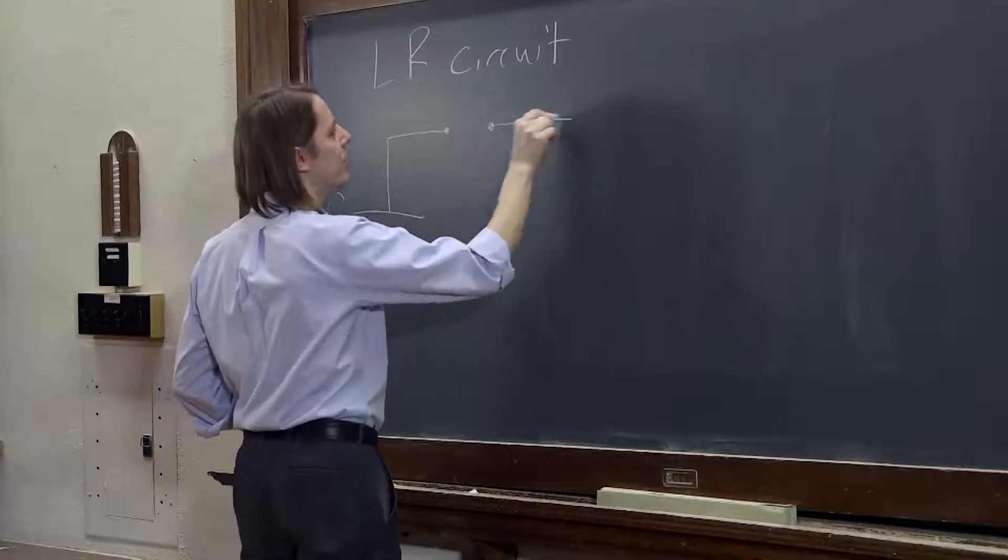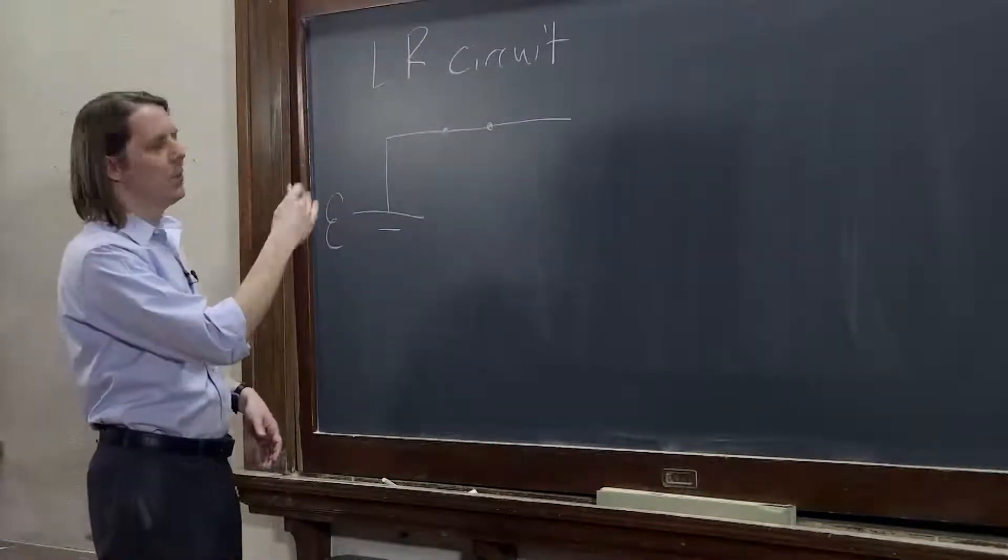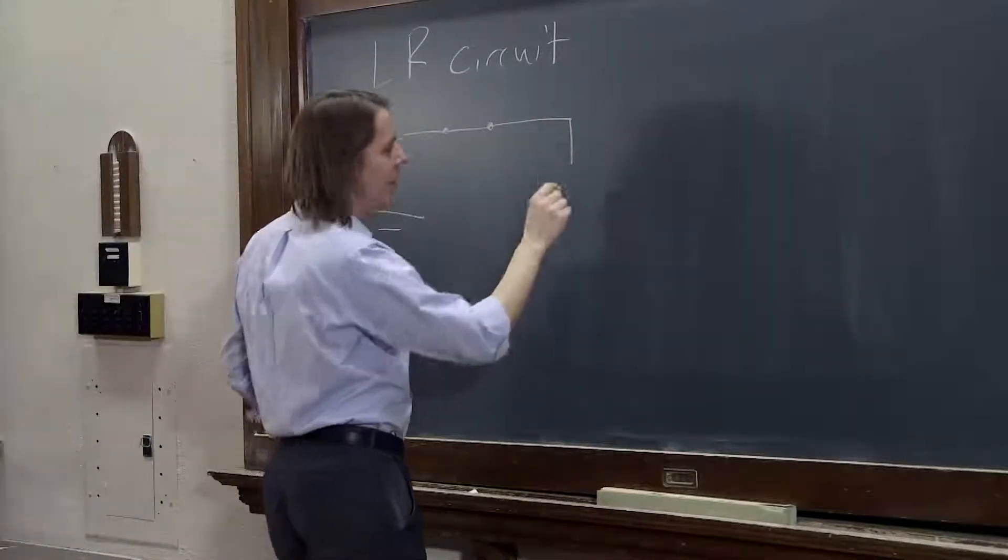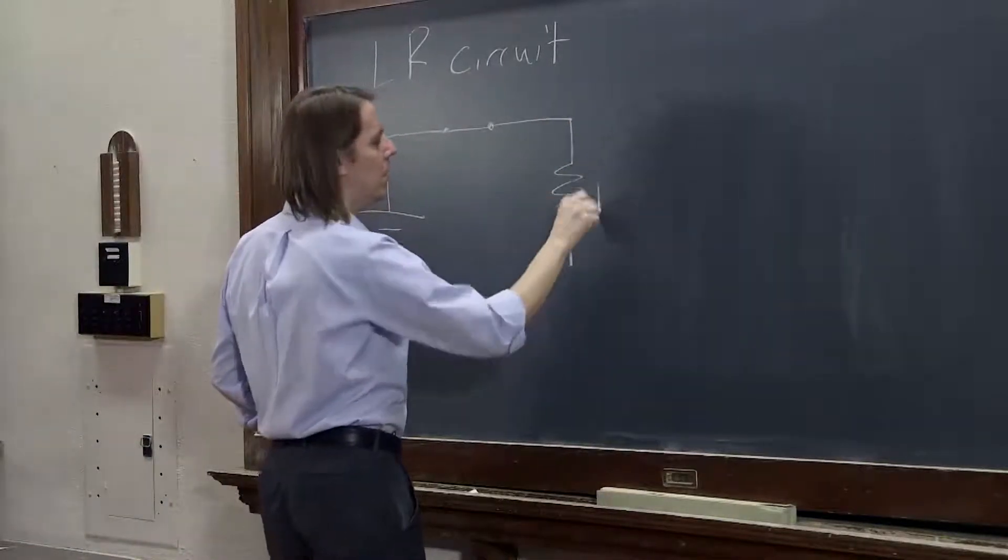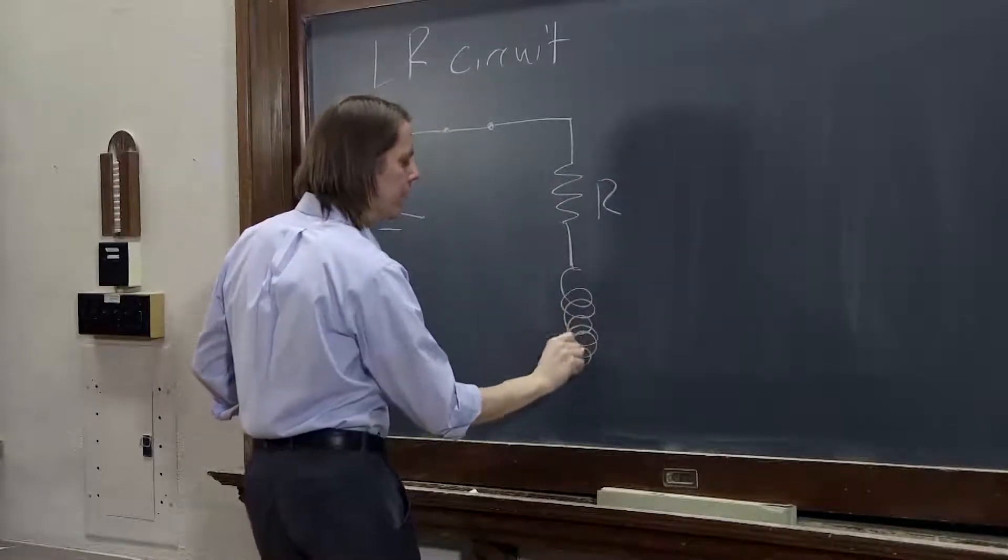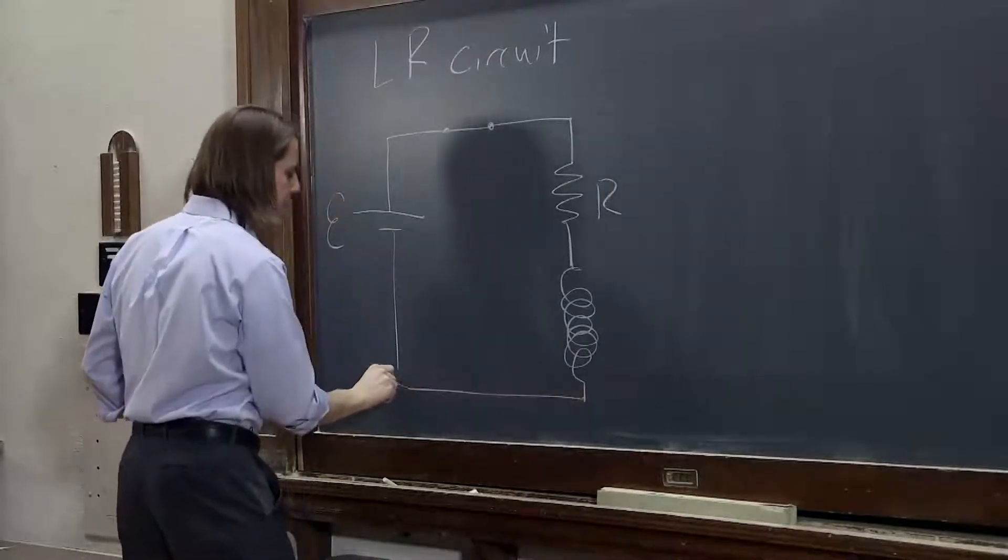And kind of like the capacitor, the RC circuits, we want to put a switch in it so that we can have time equals zero where we can turn things on and off. And then come down and have our resistor R, and have our inductor L, and then finish off the circuit like that.